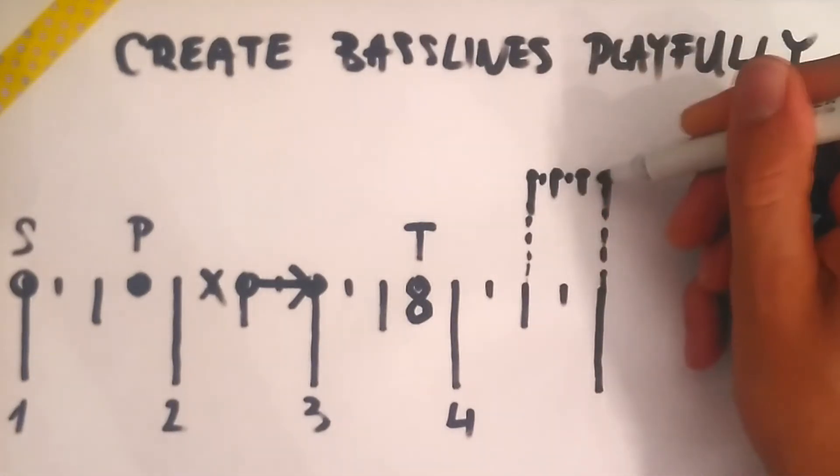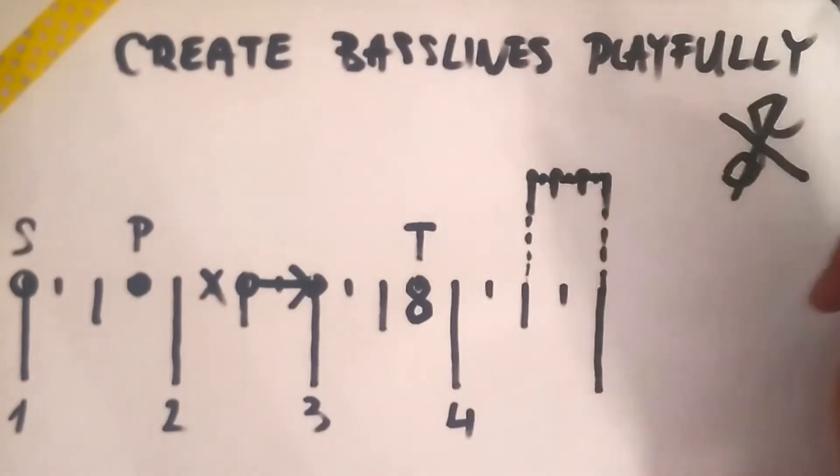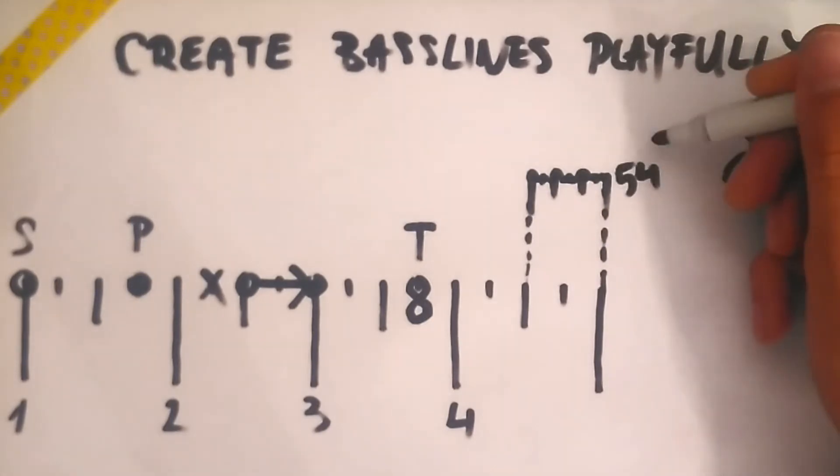Triplets can of course become sextuplets if we further divide the ruler. We can also work with quintuplets, or septuplets, or any kind of tuplet for that matter.